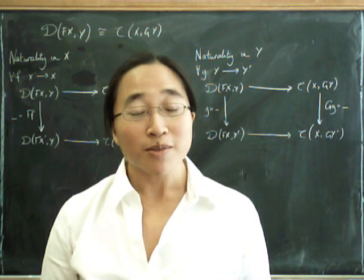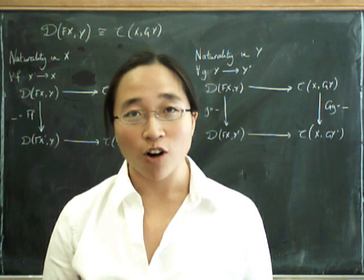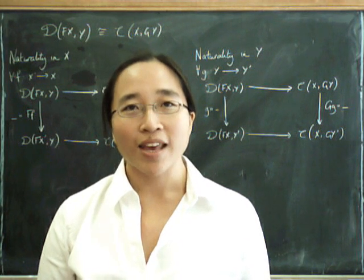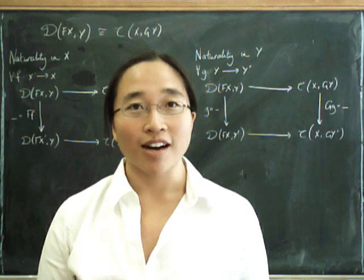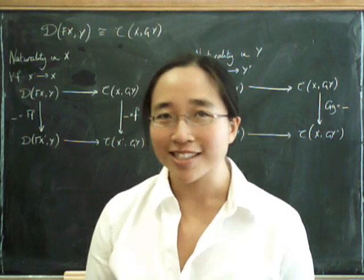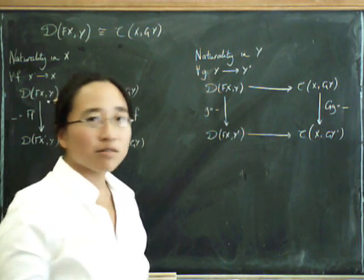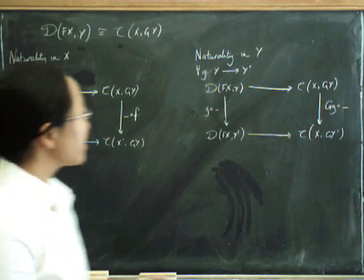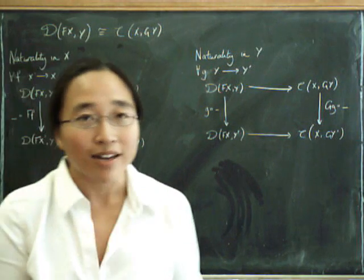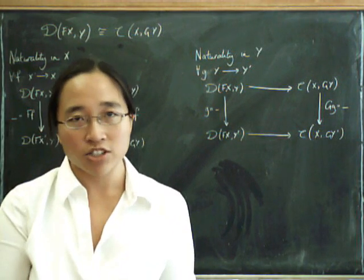At the end of adjunctions 2, I promised to prove that the two definitions we've given of an adjunction were both the same. And then I manifestly chickened out of actually doing it because I got cold feet and wasn't sure if I could spontaneously do it. So I've now gone and warmed my feet up, and we're now going to prove that the definition we gave in adjunctions 1 does correspond to the definition we gave in adjunctions 2.